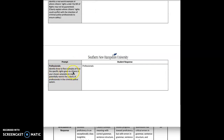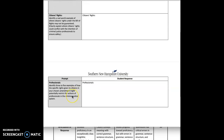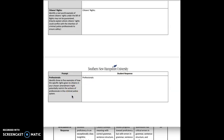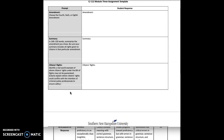Then, for professionals, identify three to five examples of how the specific rights given to citizens in your chosen amendment might potentially restrict the actions of professionals in the criminal justice system — and that could be not only police, but obviously a prosecutor as well. For example, if you decide to take advantage of your Miranda warnings, then the prosecutor is not going to have any type of admission or confession on your part, which may stymie his ability to proceed further with the case. Similarly, if evidence the court deems has been seized improperly can't be used in court because of the exclusionary rule, that's going to impede the prosecutor's ability to prosecute the case.